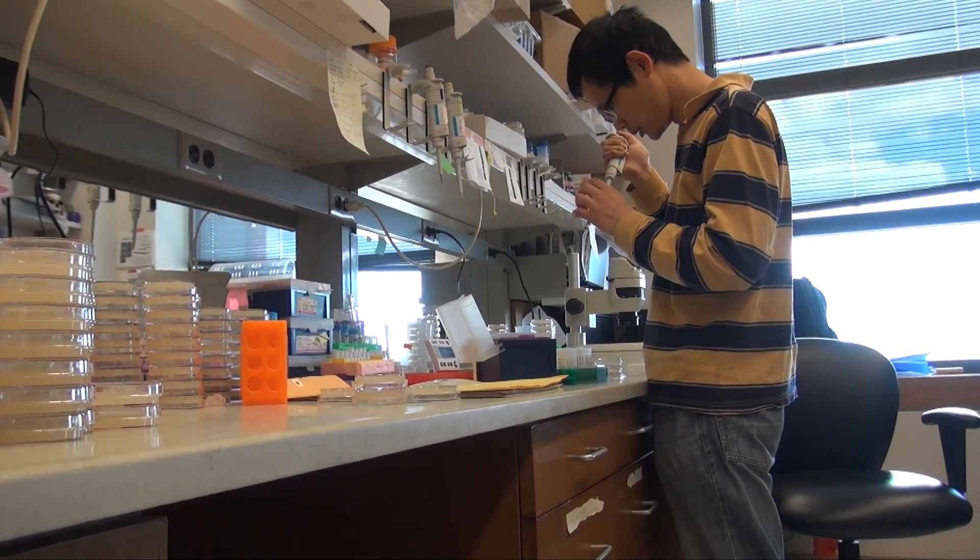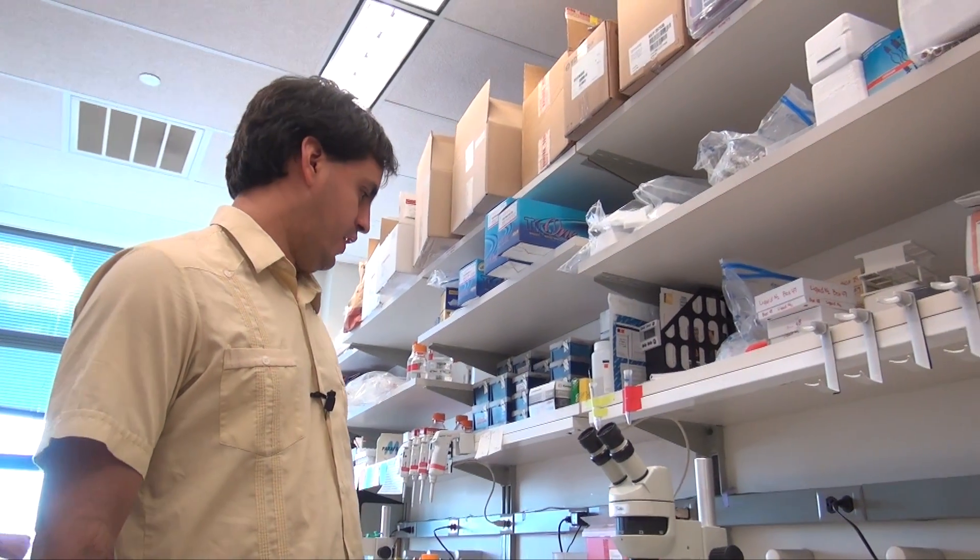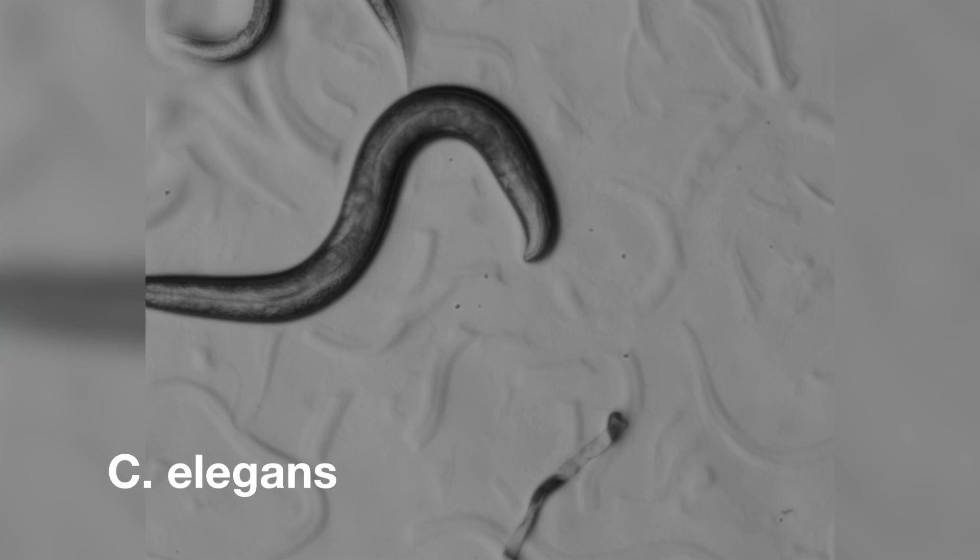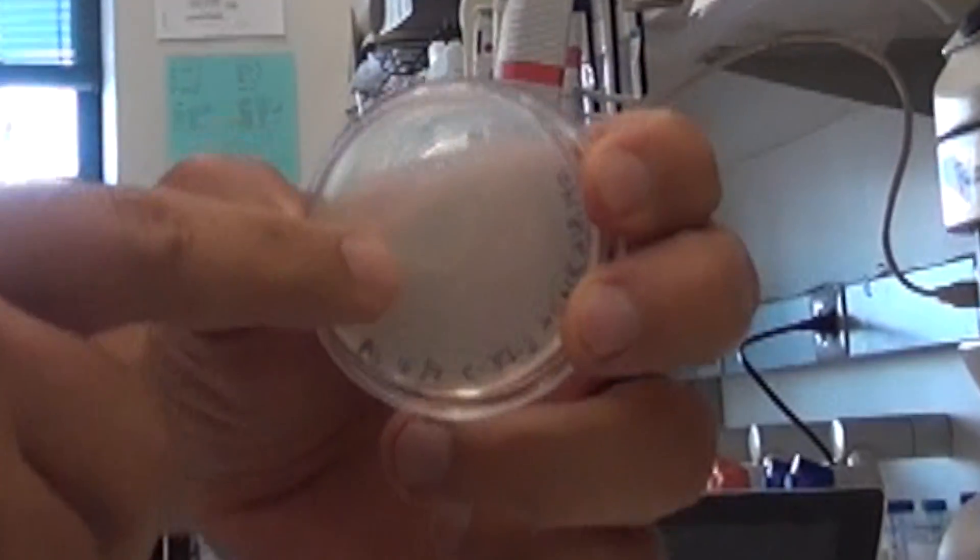This room is the main part of my lab where people do their experimental work. This is an example of how a bench looks like. So we work on a nematode. It grows in these plates.